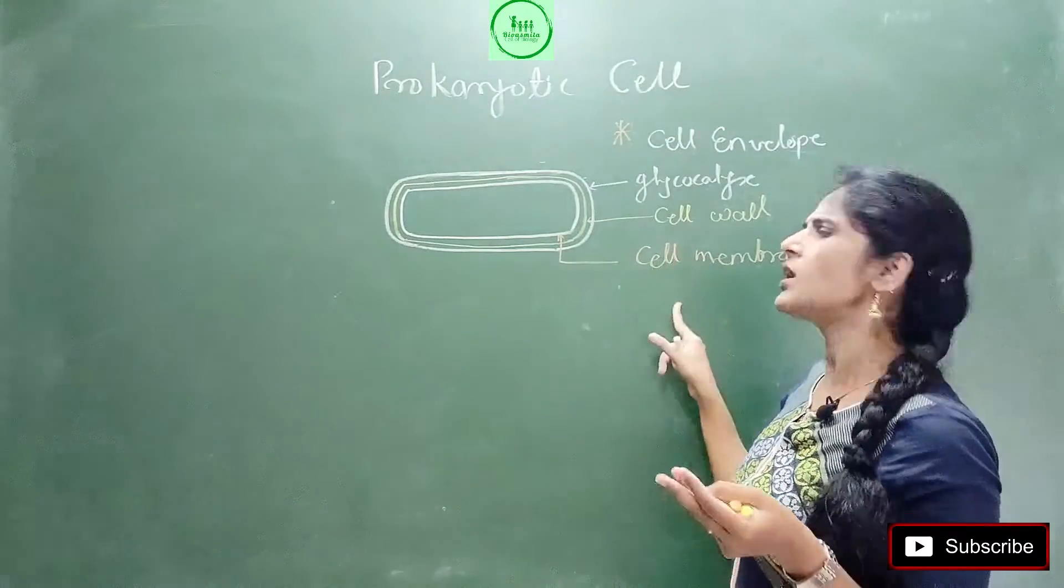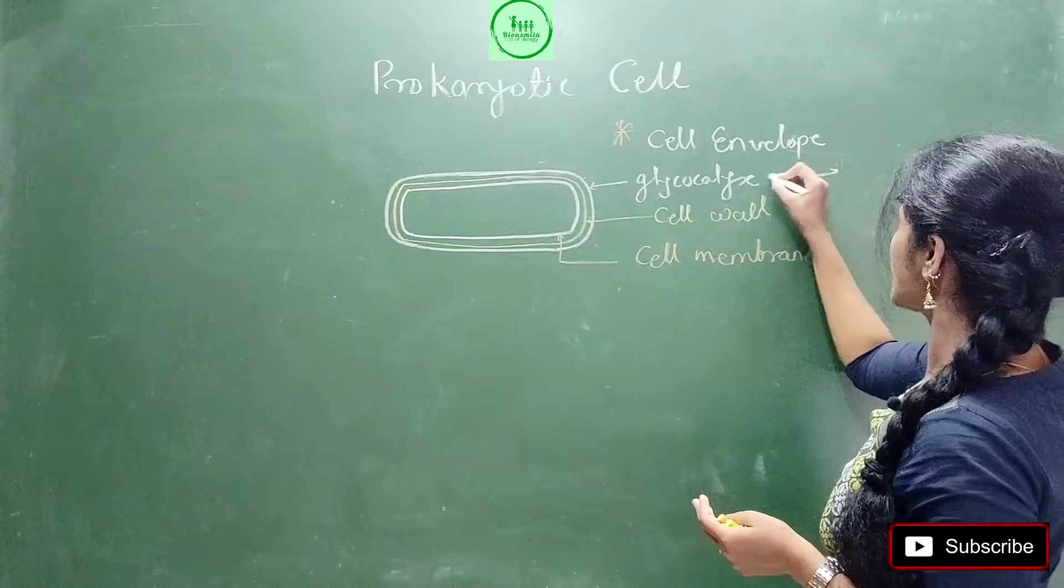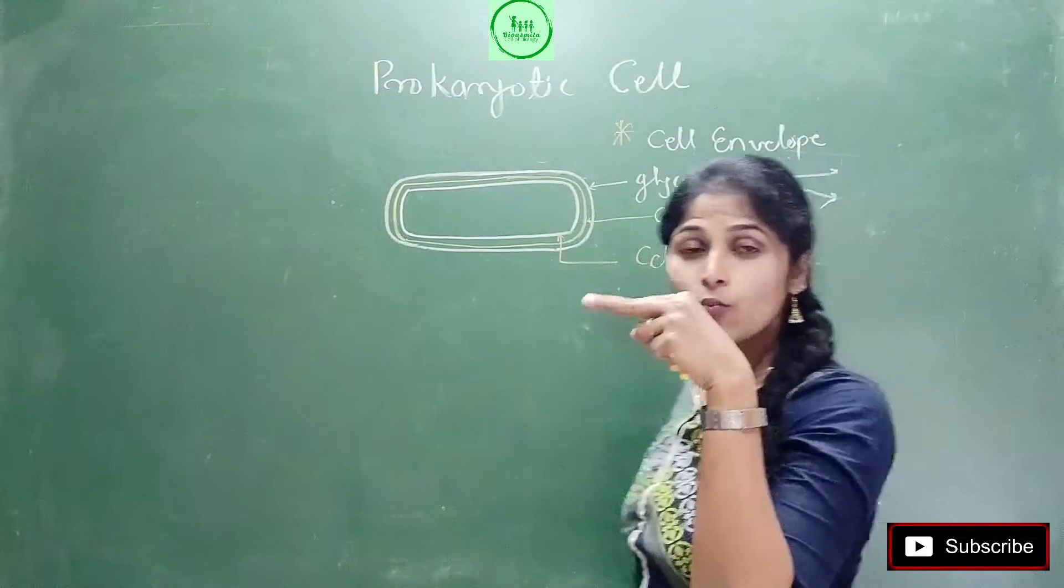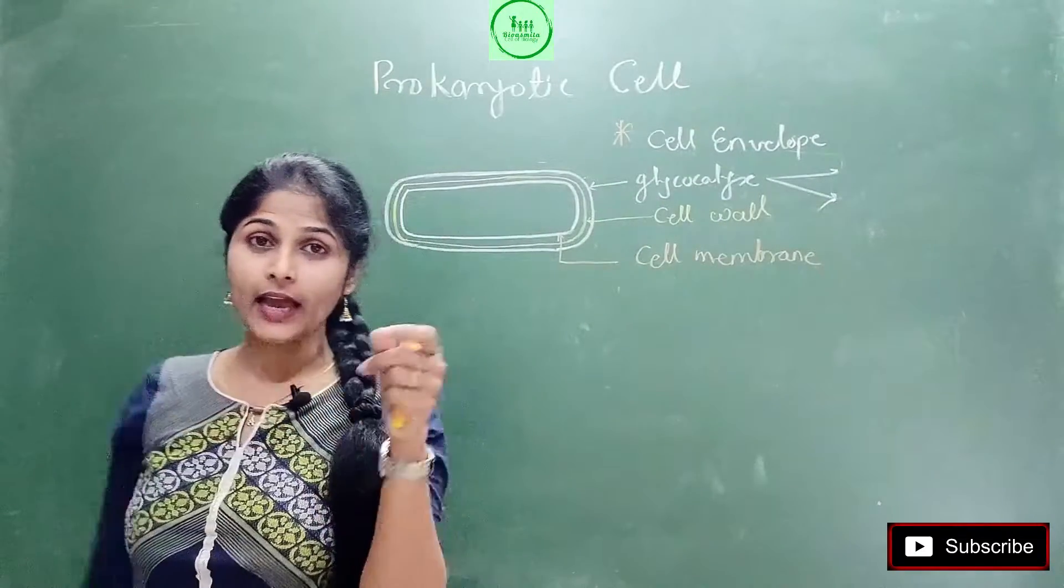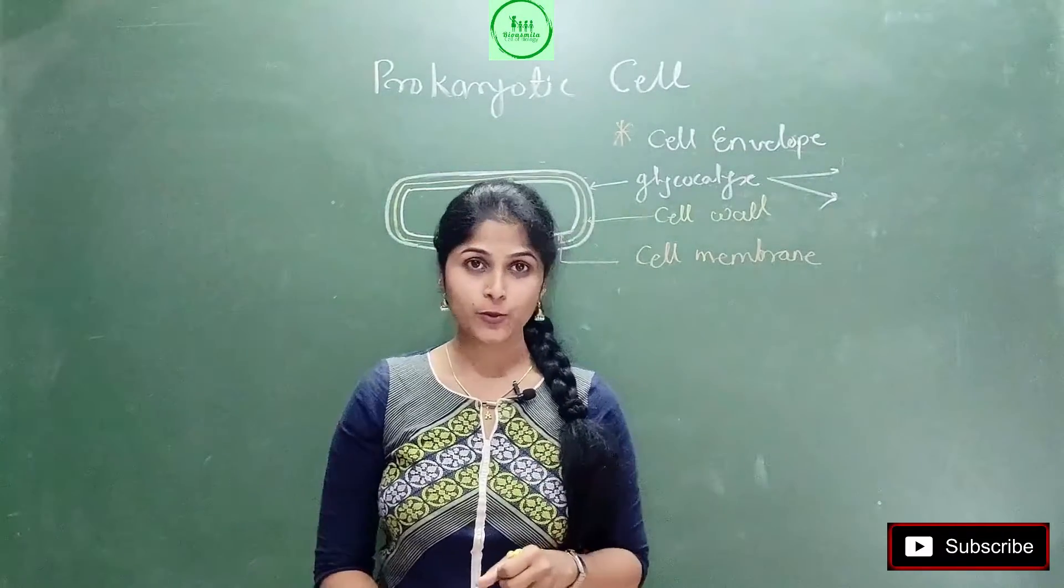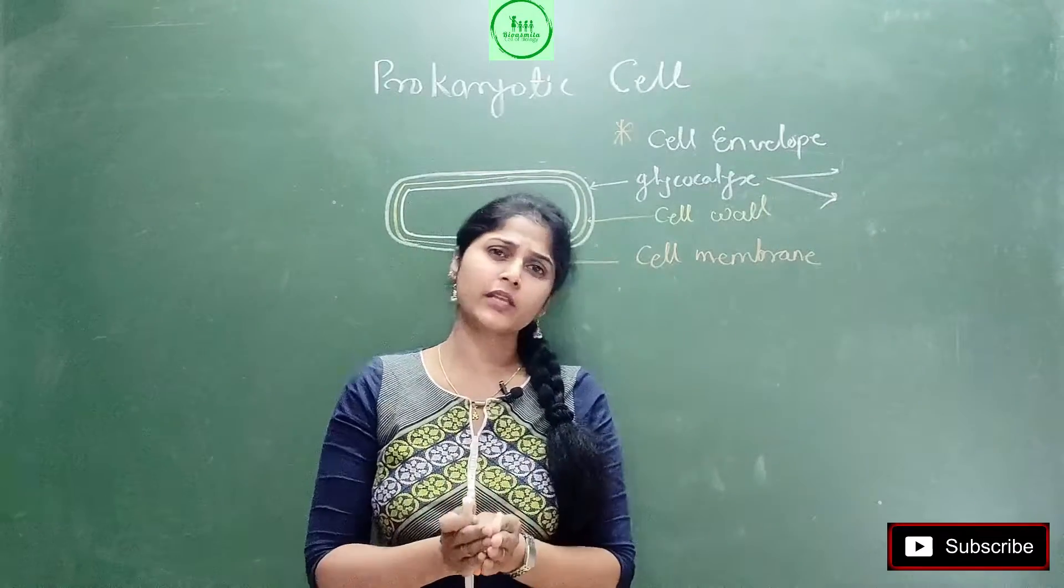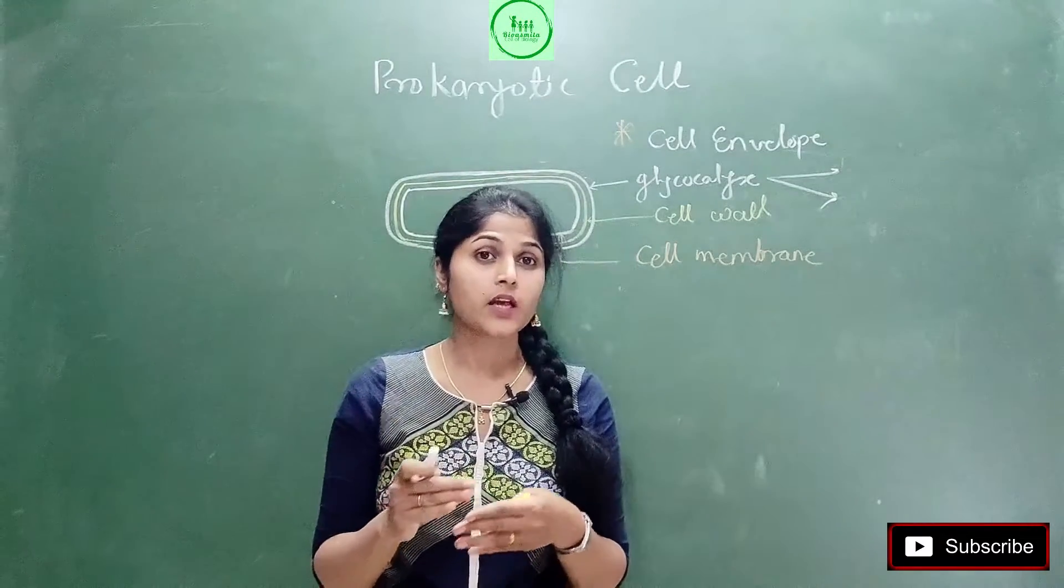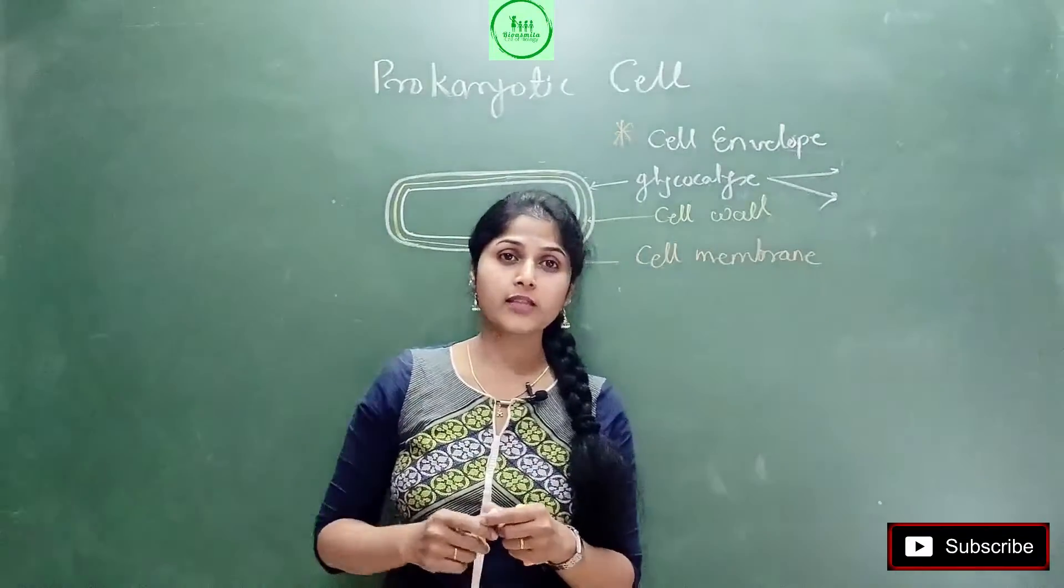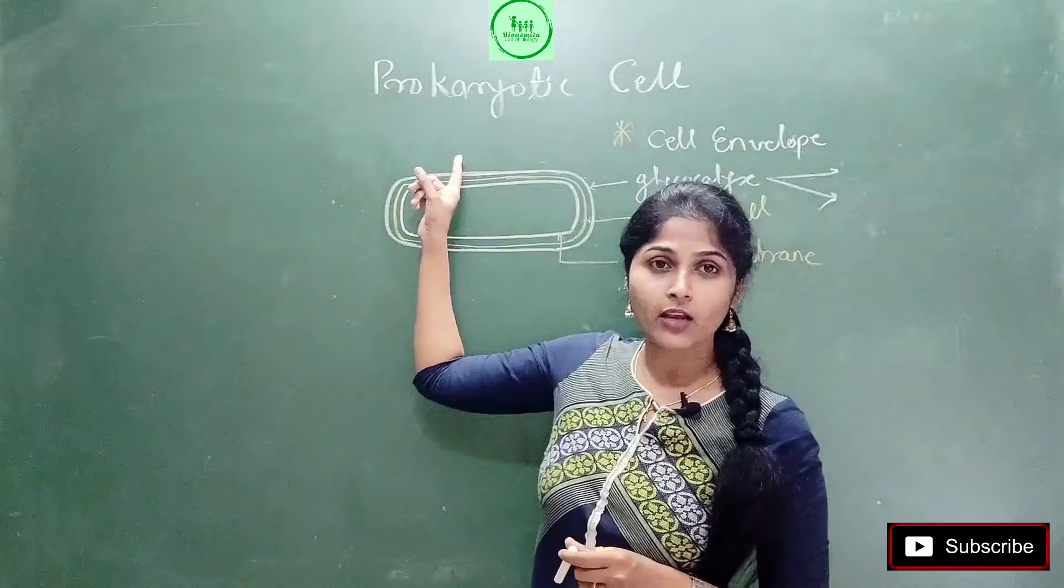We also discussed that glycocalyx has two forms or two natures - it can be very slimy, or it can be thick when it is called a capsule. In the previous video we also looked at what parts or cell organs are present on the surface of this bacteria.